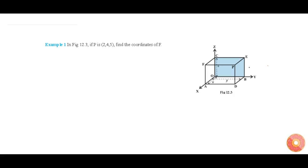In this question, it is given that P equals (2, 3, 5), which means the distance from the yz-plane is 2, the distance from the zx-plane is 3, and the distance from the xy-plane is 5. Now we need to find the coordinates of F.